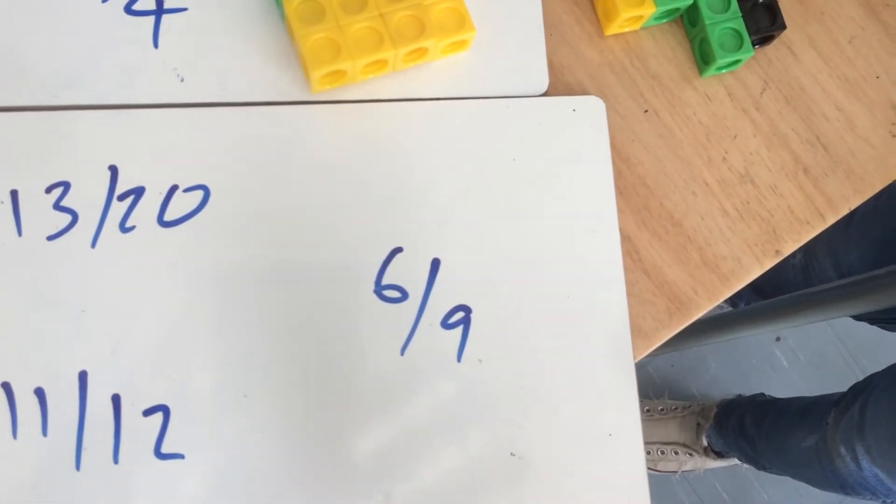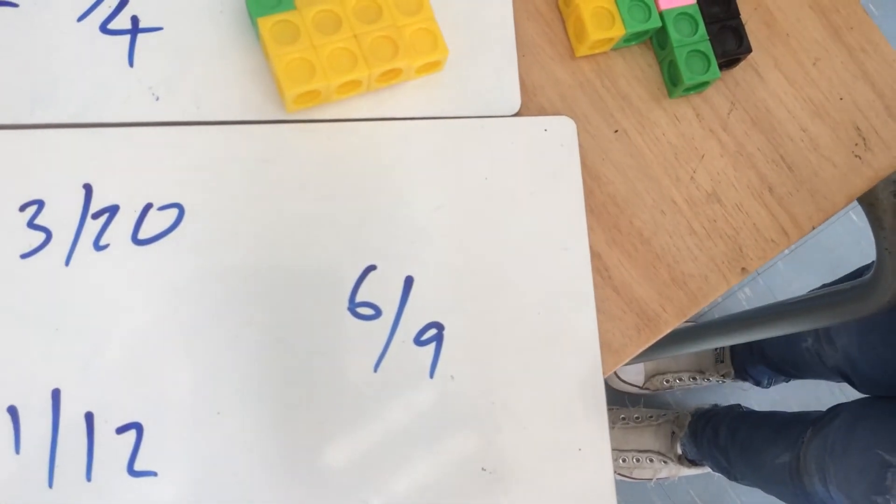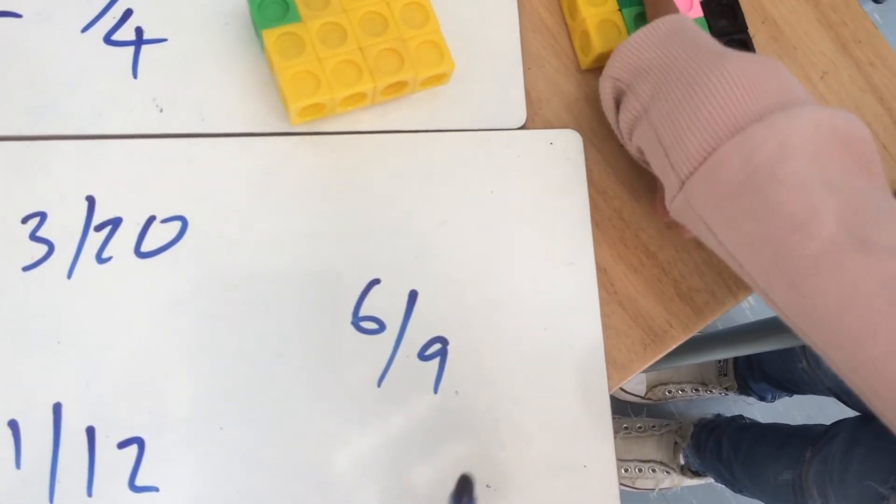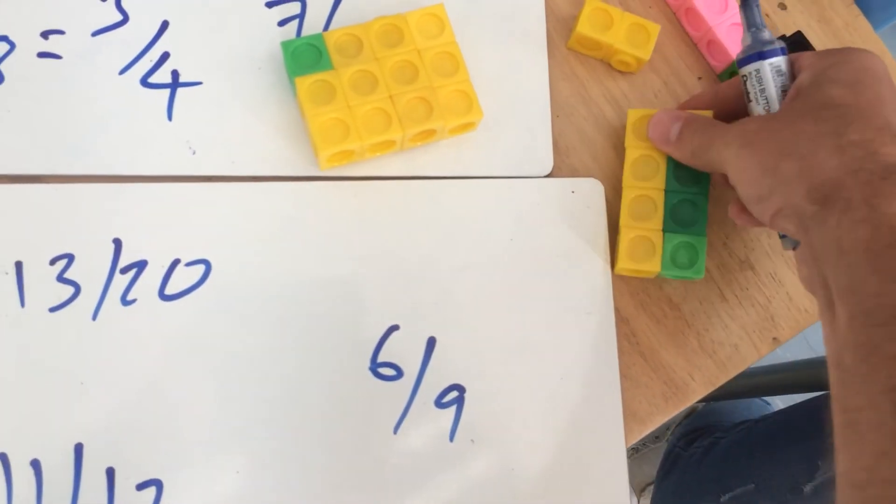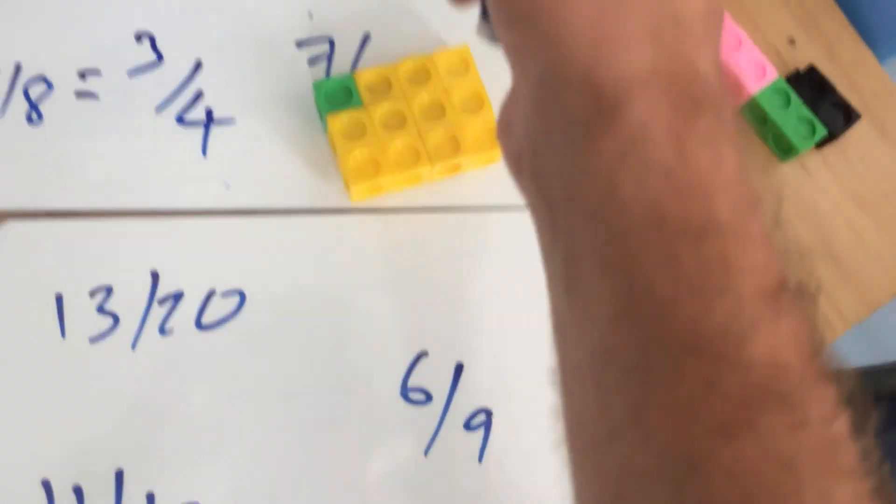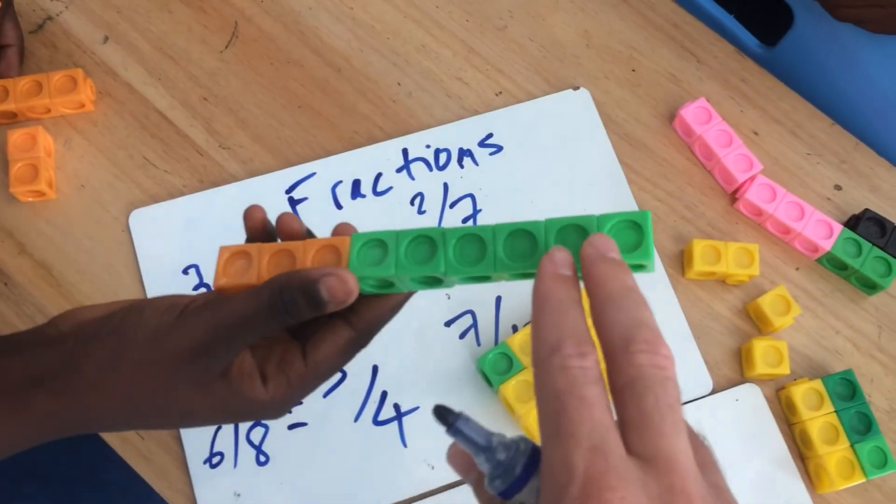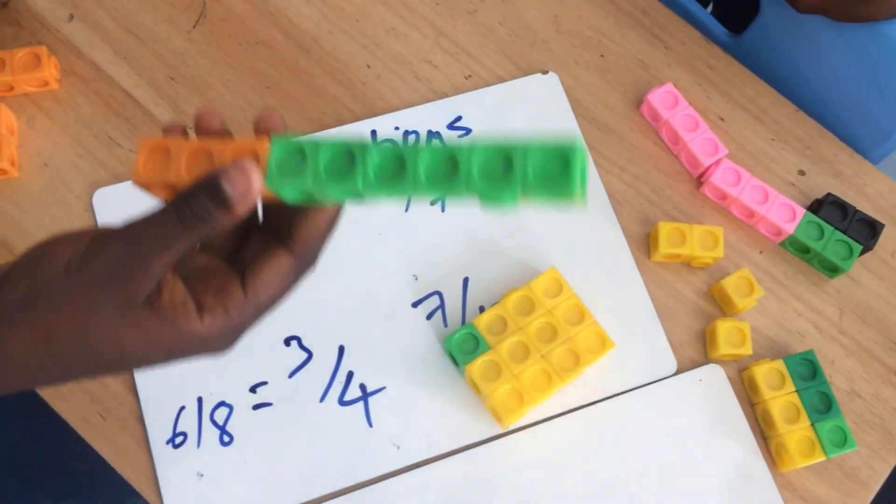Has anyone got six out of nine? We could make that quickly. Yeah. So we could make two, four, six. Oh, you've got that there. Well done. Two, four, six out of nine. Fantastic.